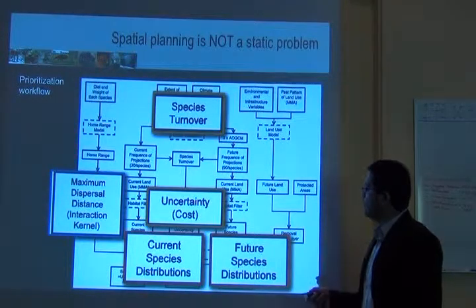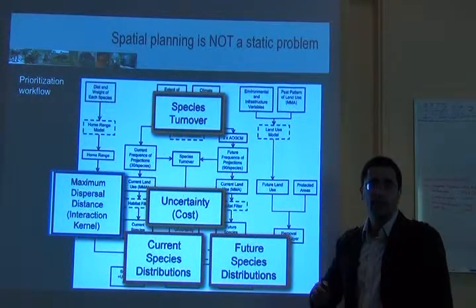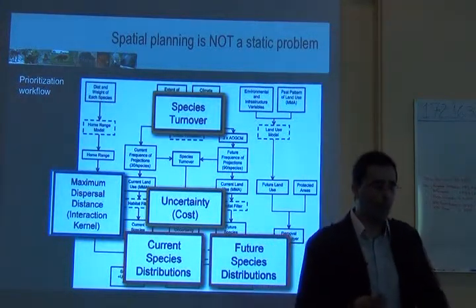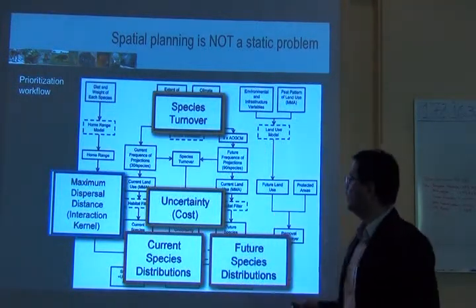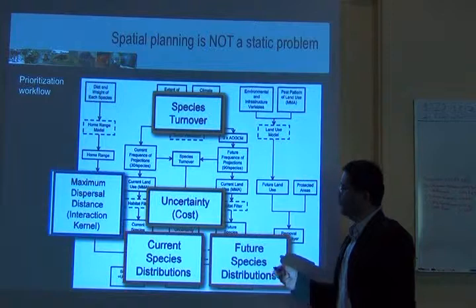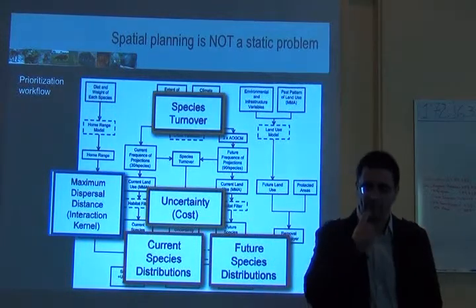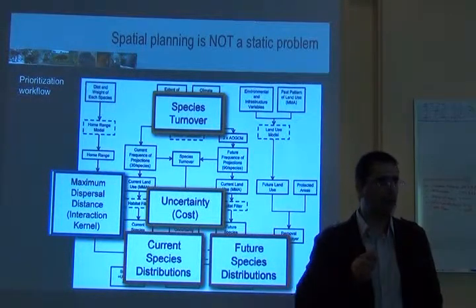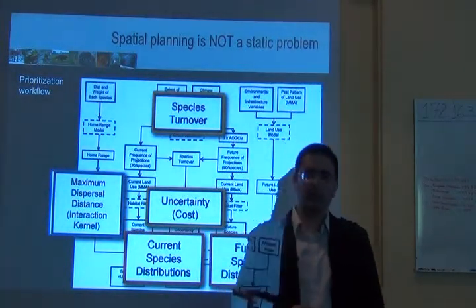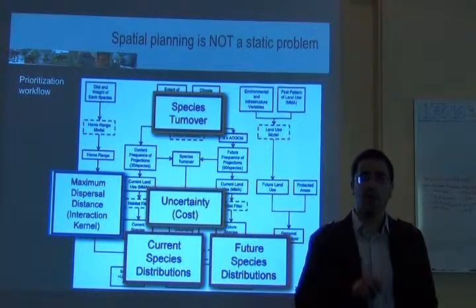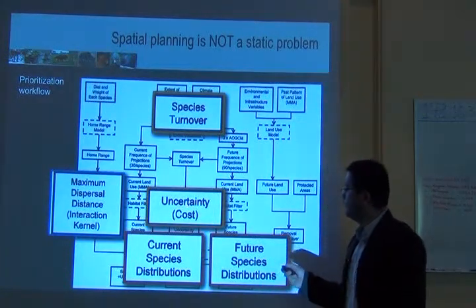Because we model current and future distribution, we have species turnover at each site. We know how many species will be there and what they are — we have the composition of species for that site. And this gives us some uncertainties. What are the species that will actually be in that place? I'm not sure if a species will be there because of dispersal limitations and because I have a model — and my model has an error that I should account for using uncertainty.